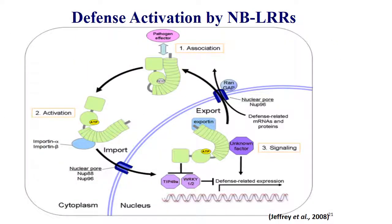Defense activation by the NBS-LRR complex involves association and activation. Import and export signals from the cytoplasm into the nucleus recognize specific signaling molecules like Wrky genes or TIP49A, leading to defense-related expression. When activation or recognition does not happen, defense-related expression is absent in the nucleus, meaning a susceptibility signal is passed to the cytoplasm.